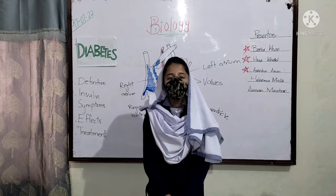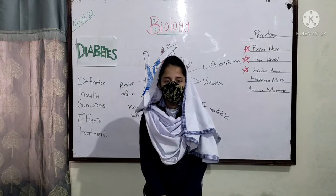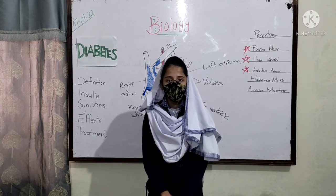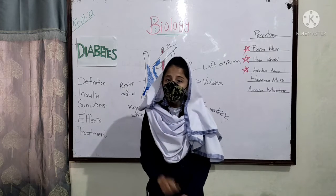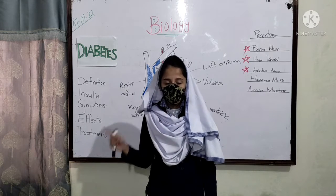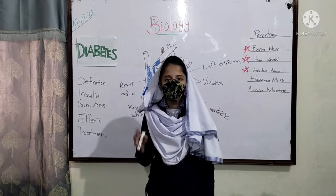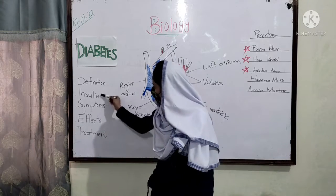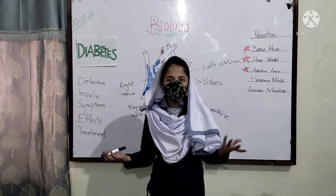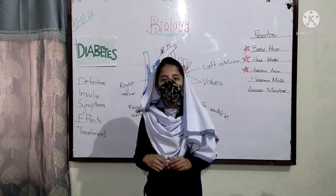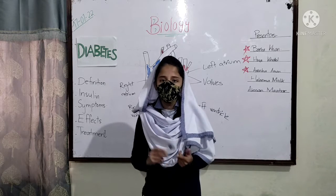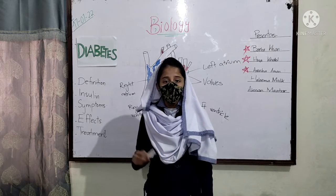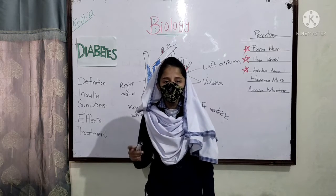Diabetes is a disease in which a person has high blood sugar because his or her body does not produce enough insulin. Insulin is a chemical that is produced in our pancreas.